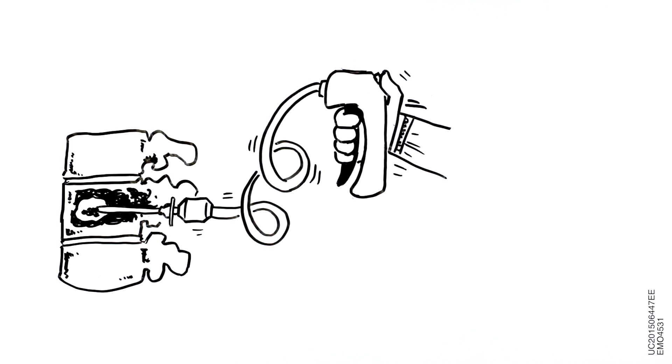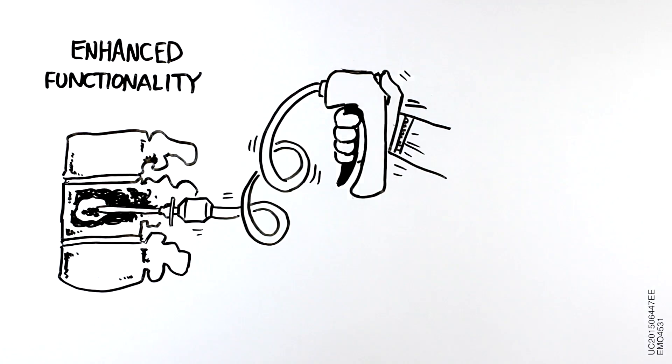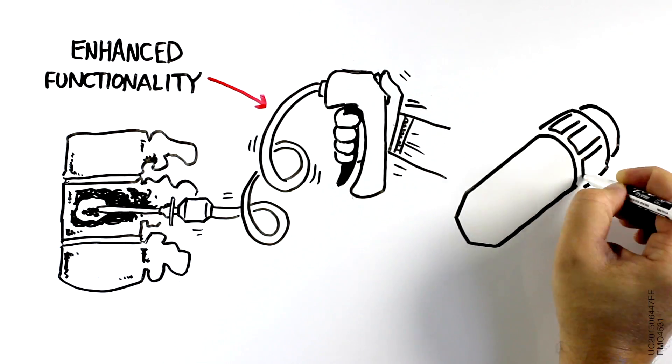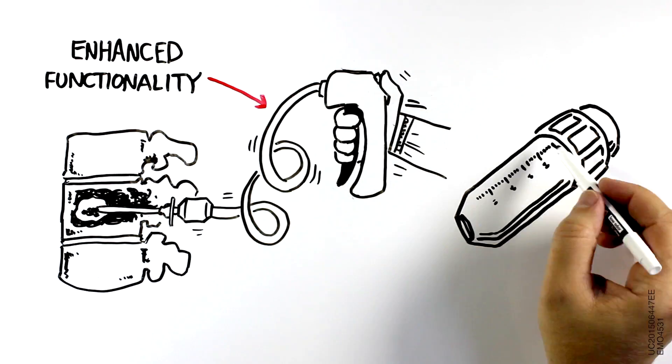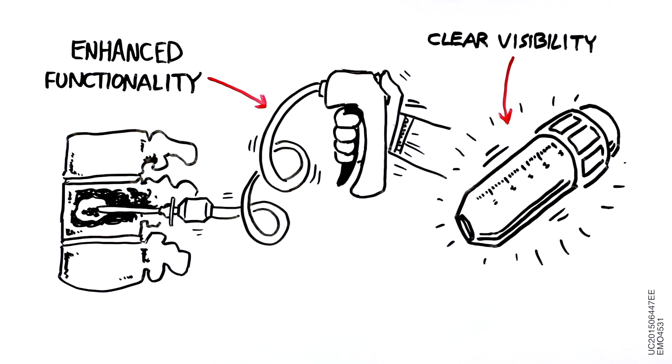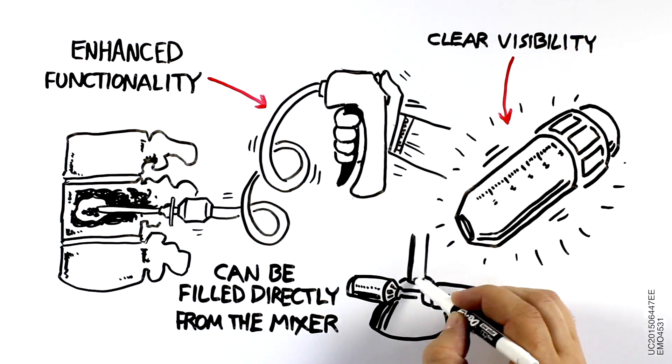The CDS system has recently undergone some serious improvements. Enhanced functionality of the gun is now combined with transparent cement cartridges with high contrast markings for clear visibility of the quantity of cement being deployed, both of which can be filled simultaneously directly from the mixer.